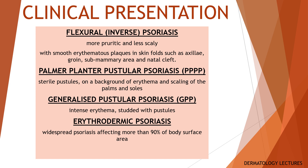Erythrodermic psoriasis is widespread psoriasis affecting more than 90% of the body surface area. It can occur after prolonged application of potent or super potent topical steroids, infections or stress. Erythrodermic psoriasis is also a medical emergency.